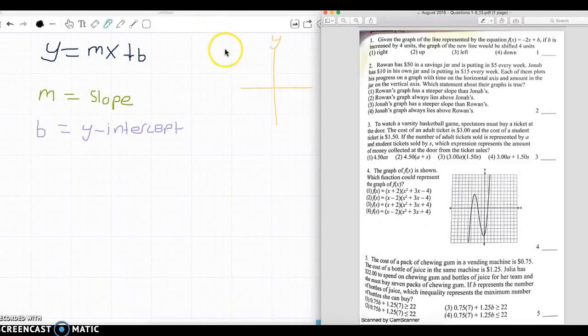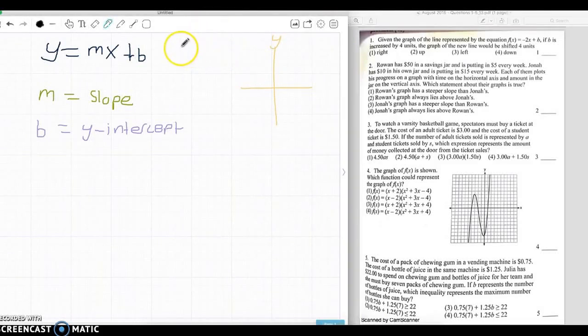And we see that it's a positive sign. This f(x) equals negative 2x plus b. So if it's plus b, we know that it's going to be shifted up, because positive sign means up, negative sign equals down. So our answer is number two, up.